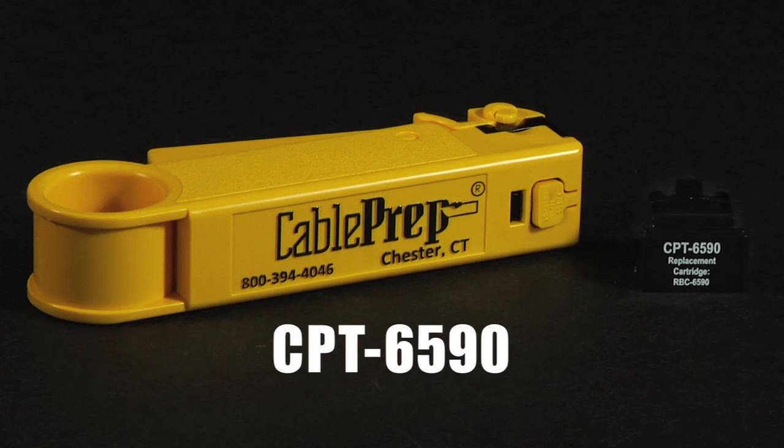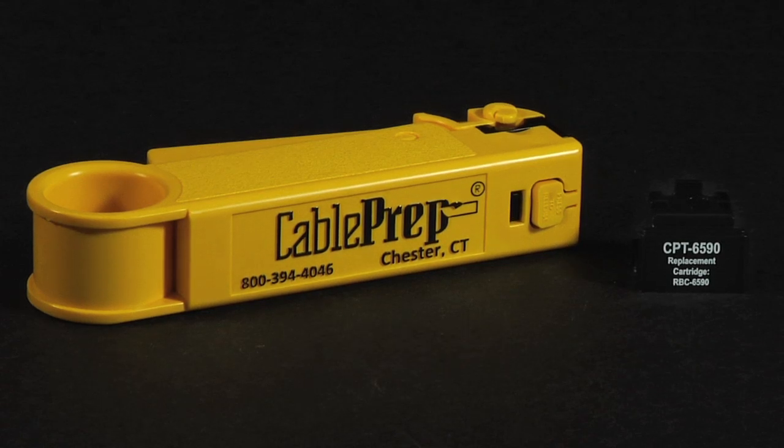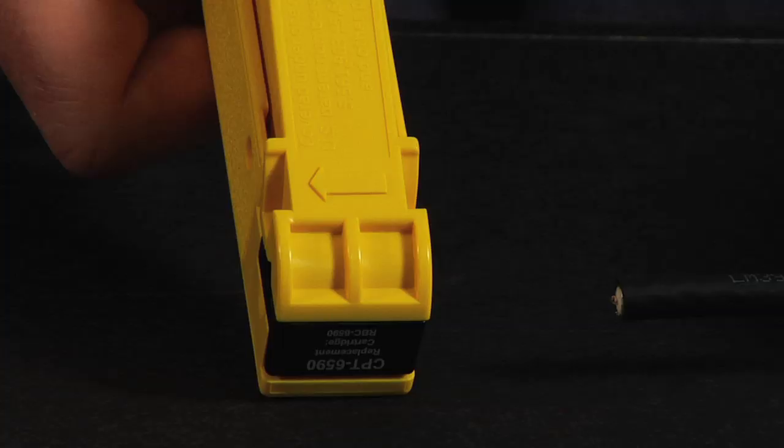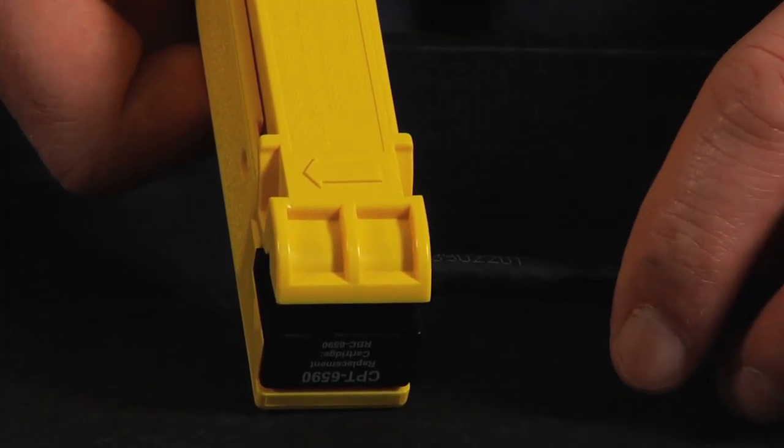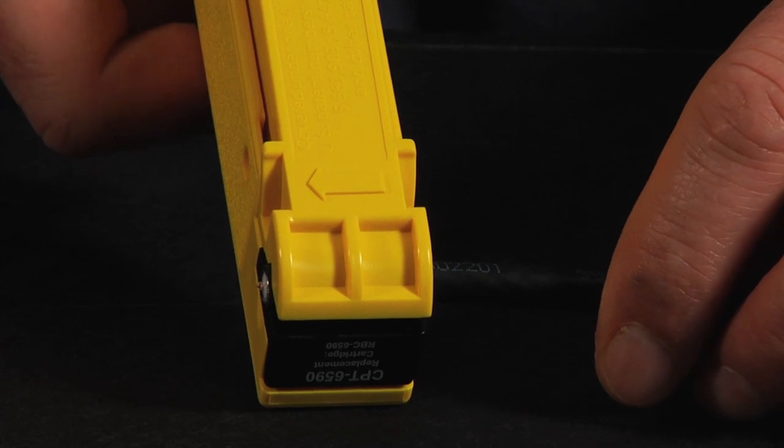CPT 6590 for 6 and 59 type cables. Depress the lever on the tool and insert the cable in the direction of the arrow until the end of the cable is flush with the end of the blade cartridge.